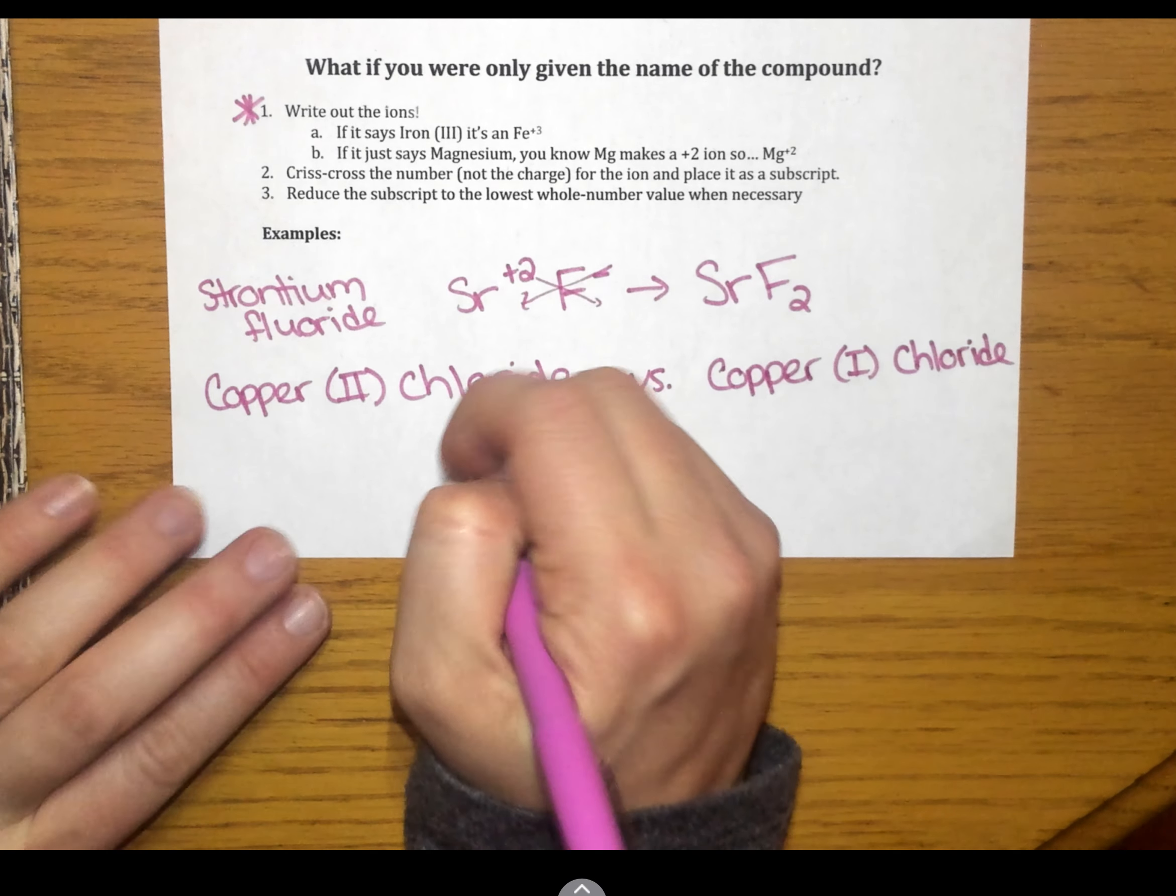So, really make sure you're paying attention to, one, what is it asking me for? What is the name? And two, if it has the Roman numerals, that is going to be the charge on your cation.